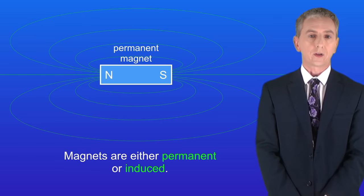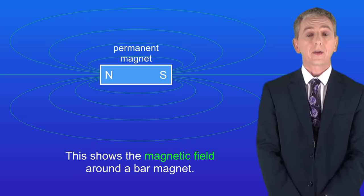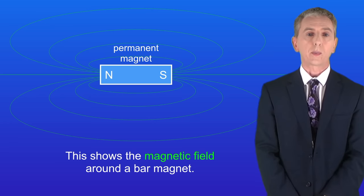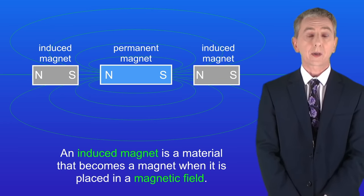In the last video we saw that magnets are either permanent or induced. A permanent magnet always has a magnetic field, and I'm showing you here the magnetic field around a bar magnet. An induced magnet is a material that becomes a magnet when it's placed in a magnetic field.